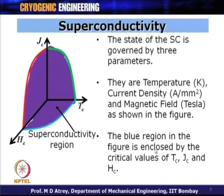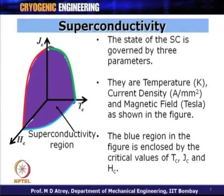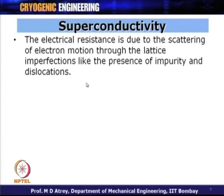The blue region in the figure is enclosed by Tc, Jc, and Hc. If Jc equals zero and Hc equals zero, the material temperature has to be less than Tc in order for it to remain in a superconducting state. One has to keep lowering the temperature for the material to become superconducting. A very important point: if a material is superconducting, the current density cannot exceed Jc; as soon as any one parameter is violated, the material ceases to be superconducting.